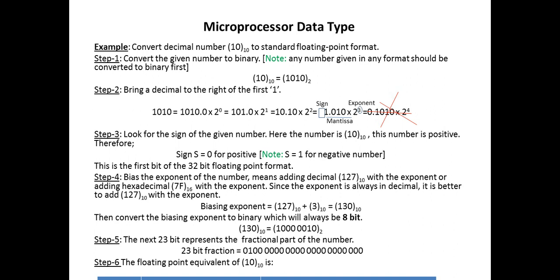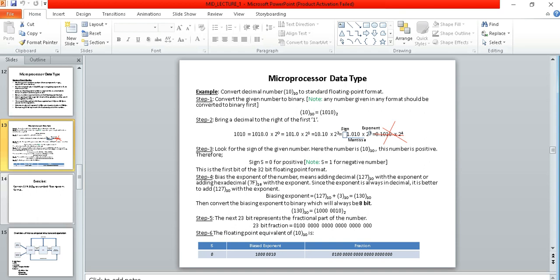After that, the next 23 bit represents the fractional part and that is 23 bit fraction. You have to, this is the fraction part like 0010, so you have to just put it in the fractional thing like this. So this is the sign bit and this is bias exponent what I have found here, and this is the fraction part. Thank you for watching this video and if you like my video please subscribe.